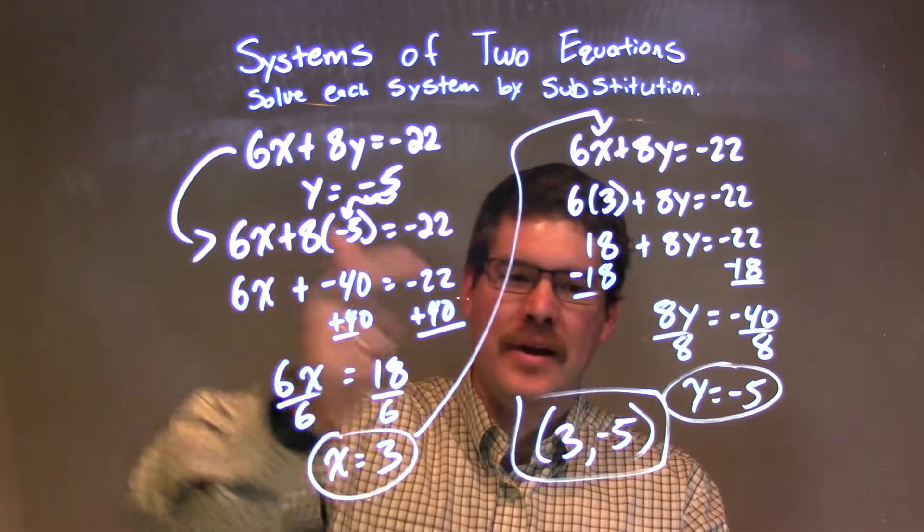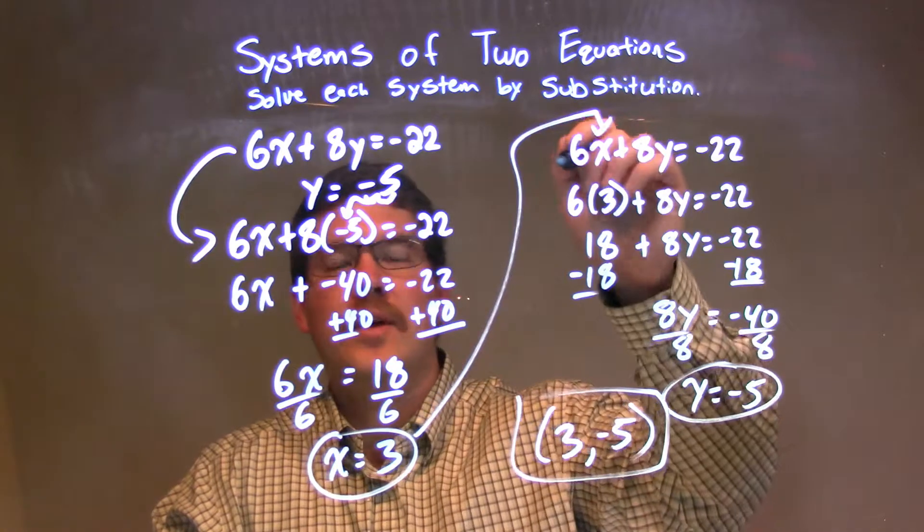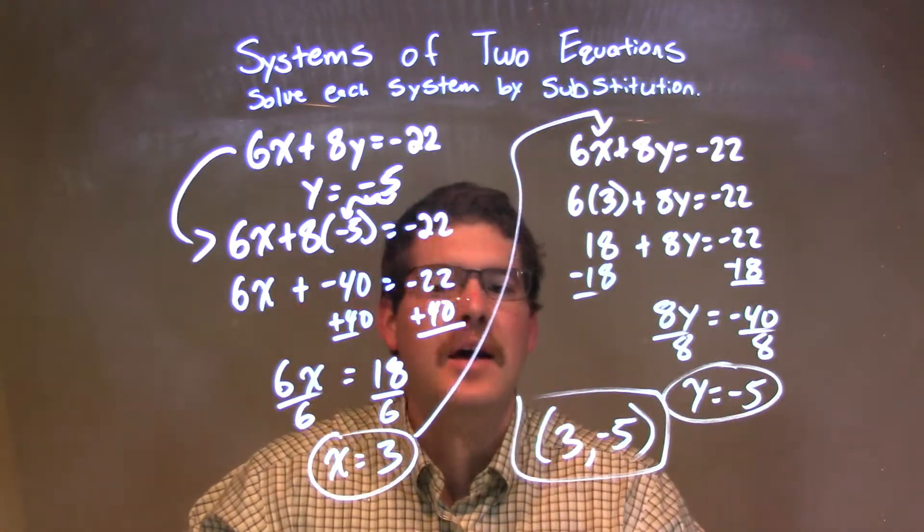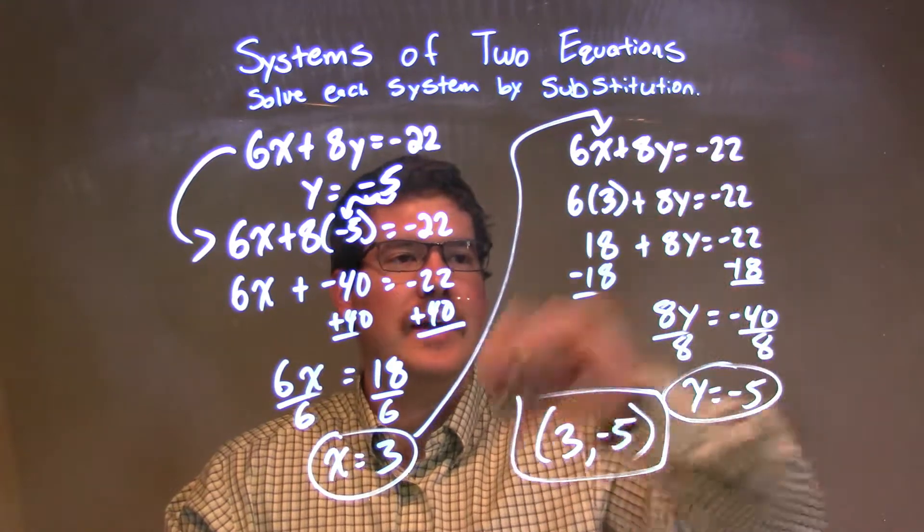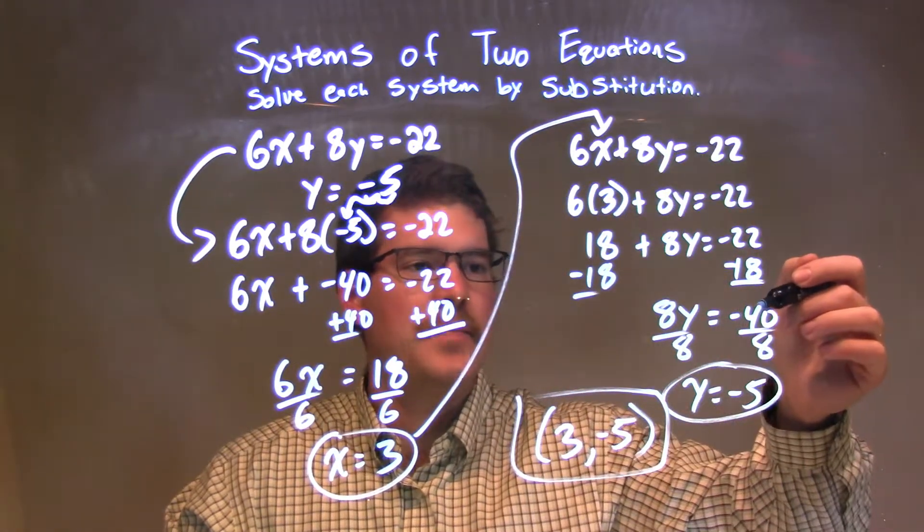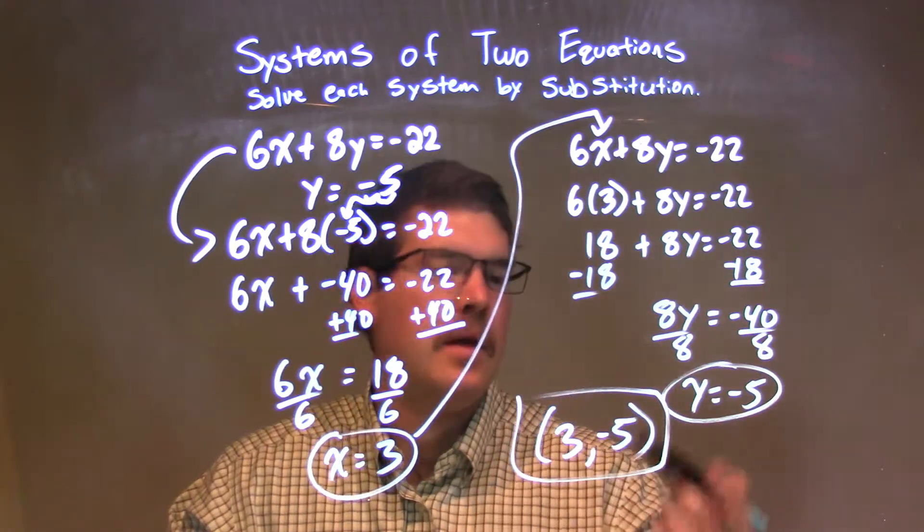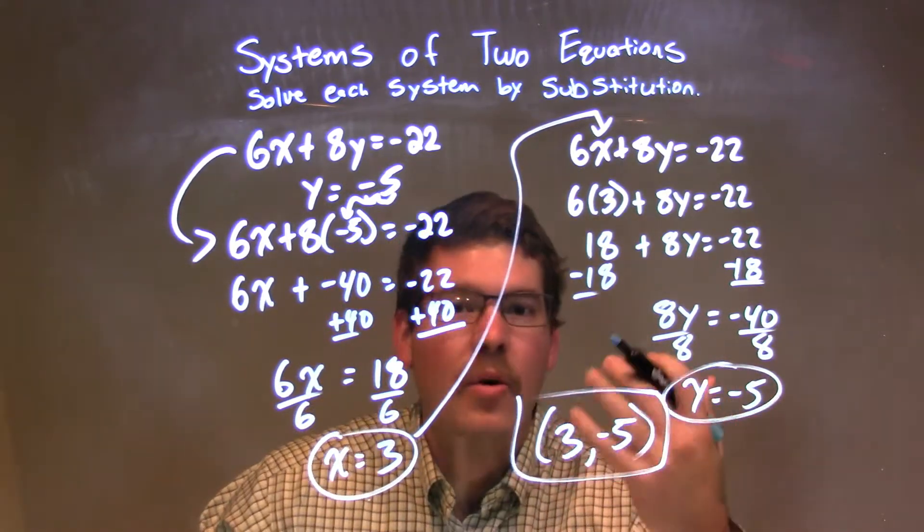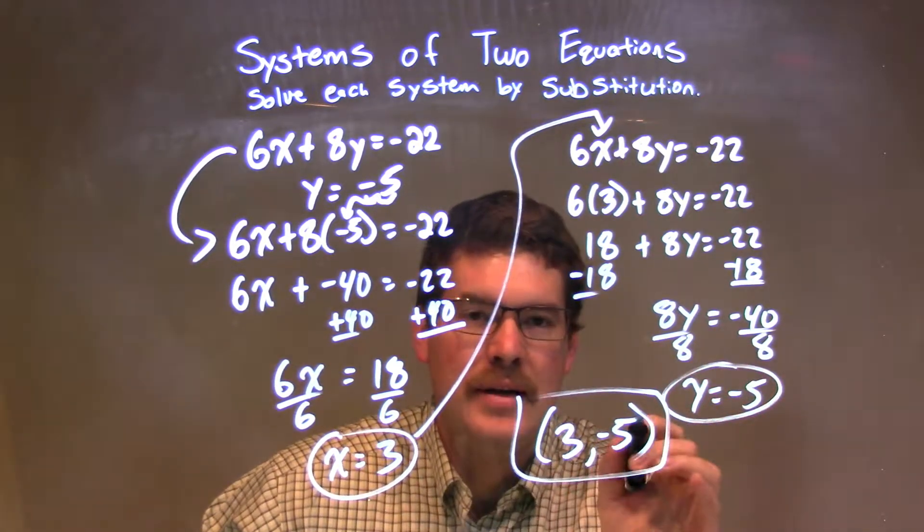At that point, I saw that y was negative 5 and x was 3. But for good measure, I plug x equals 3 into my first equation. The x value goes in, 3 right there. Simplified. 6 times 3 is 18. Subtract 18 from both sides. Got negative 40 on the right. Divided by 8 on both sides. I got y equals negative 5. We wrote that as a coordinate point. So our final answer, by using substitution, is 3 comma negative 5.